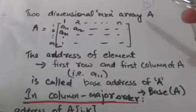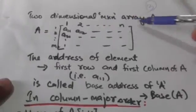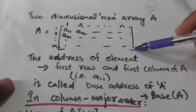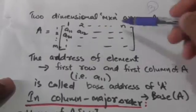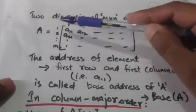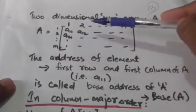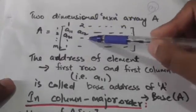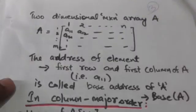Suppose there is a two-dimensional m×n array A. The address of the element which is in its first row and first column is called the base address of this two-dimensional array A.